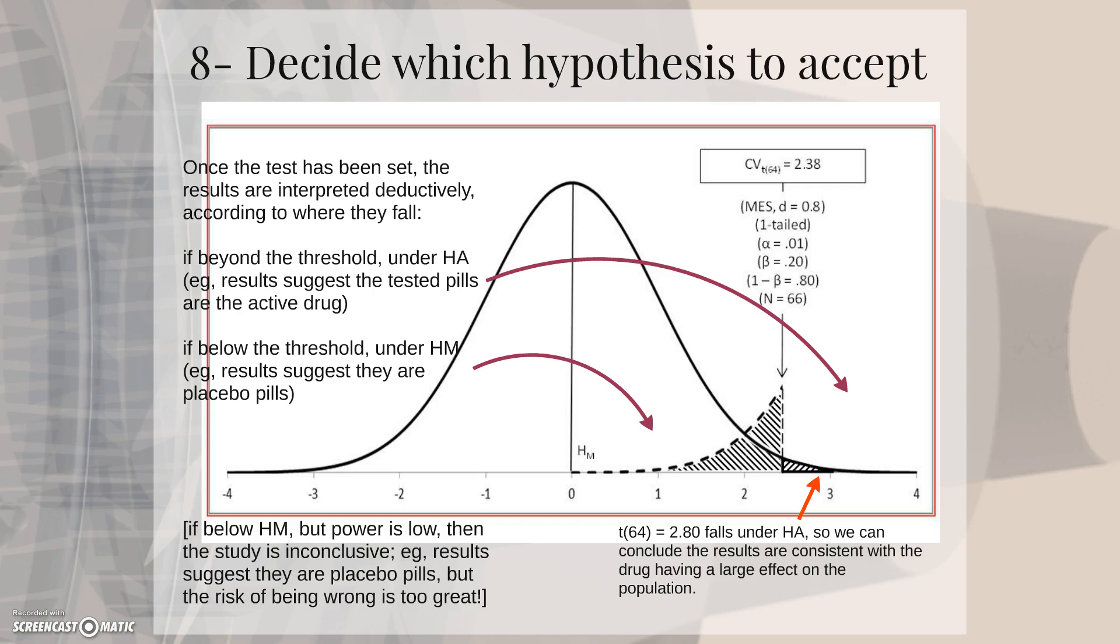In our case, our value falls under the alternative hypothesis, so we can conclude the results are consistent with the drug having a large effect on the population, and therefore the pills must be the drug.